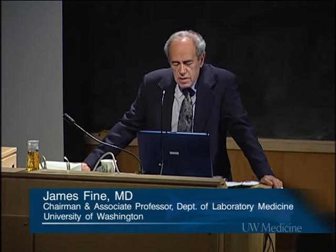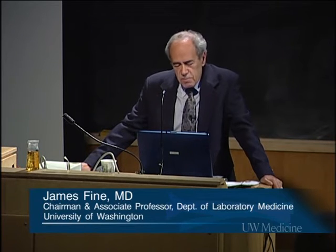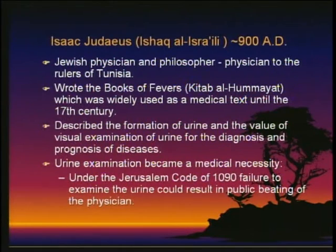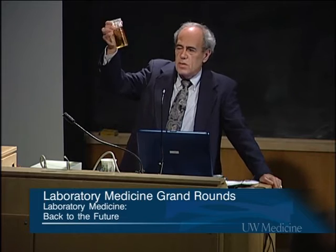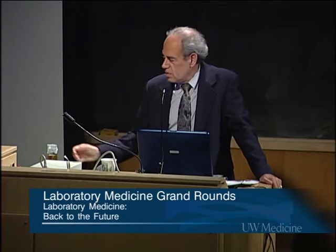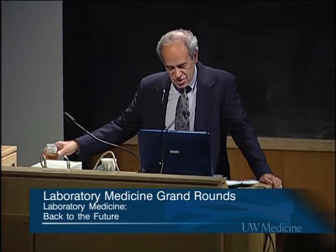Moving up the calendar to around the year 900, a Jewish physician from Egypt who was physician to the rulers of Tunisia — by the name of Isaac Judeus — wrote a book of fevers. This was widely used as a medical text until the 17th century. In that book he described the formation of urine and the value of visual examination of urine for diagnosis and prognosis of disease. Illustrations of him usually show him holding a flask. Under the Crusades, the Jerusalem Code of 1090 stated that failure to examine the urine could result in public beatings of the physician — so the laboratory was very important.